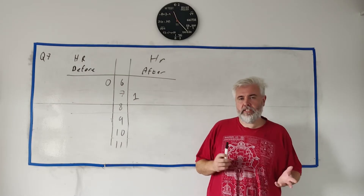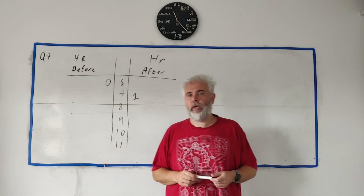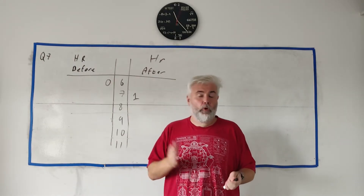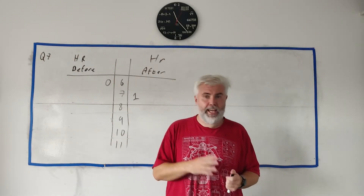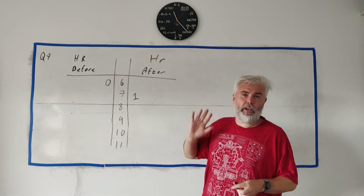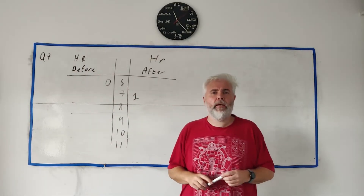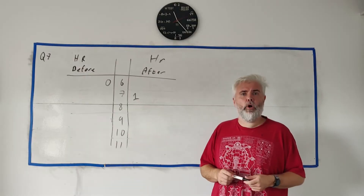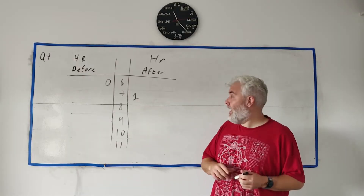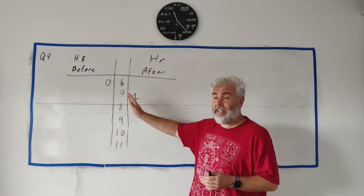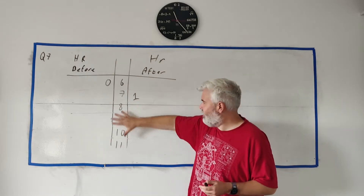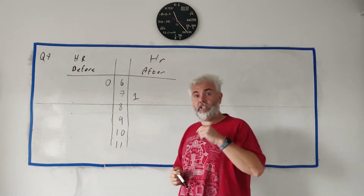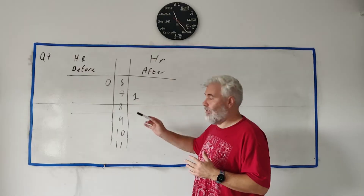In question 7 they give us a table of information that has the heart rate of certain people before exercise and after exercise. They ask you to complete a back-to-back stem and leaf diagram — they've started it off for you, and they want you to put the information from the table into it.